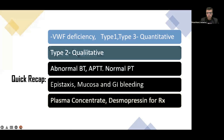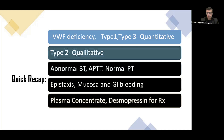Quick recap: Von Willebrand factor deficiency causes Von Willebrand disease. Type 1 and Type 3 involve quantitative deficiency, while Type 2 involves a qualitative defect. Key lab findings include abnormal bleeding time, prolonged aPTT, and normal prothrombin time. Epistaxis, mucosal bleeding, and GI bleeding are the cardinal clinical manifestations. Plasma concentrate or desmopressin are used for treatment. Thank you for watching — please share and subscribe to the channel.